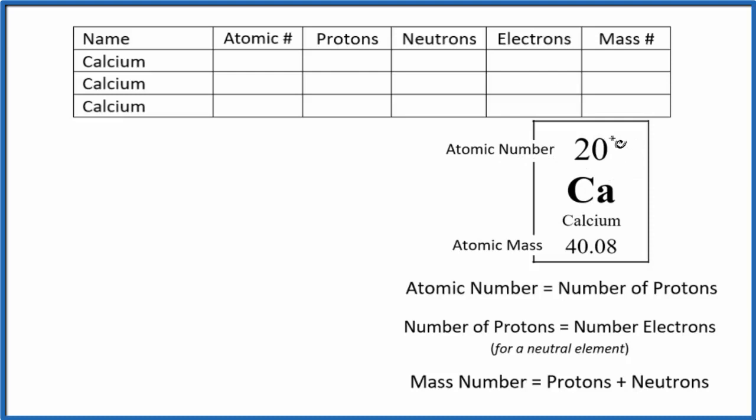For starters, the atomic number for calcium is 20, and that's going to be the same for all isotopes of calcium. The atomic number equals the number of protons, so again, 20 for all of these isotopes, and this is what defines calcium. All calcium atoms will have 20 protons and therefore an atomic number of 20.